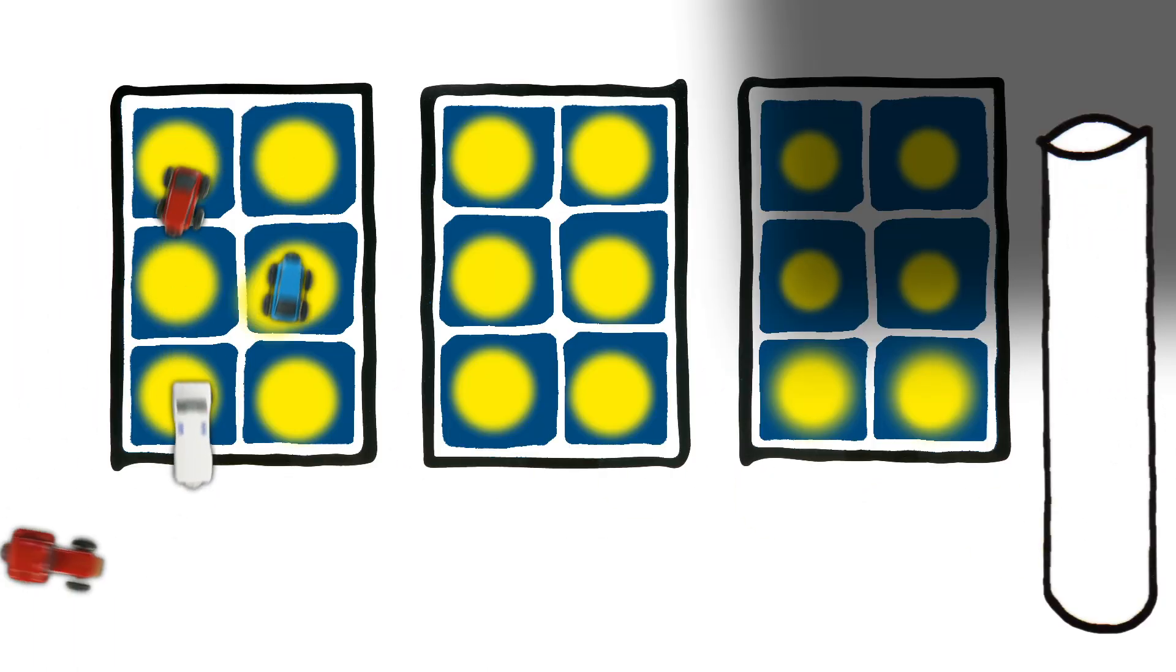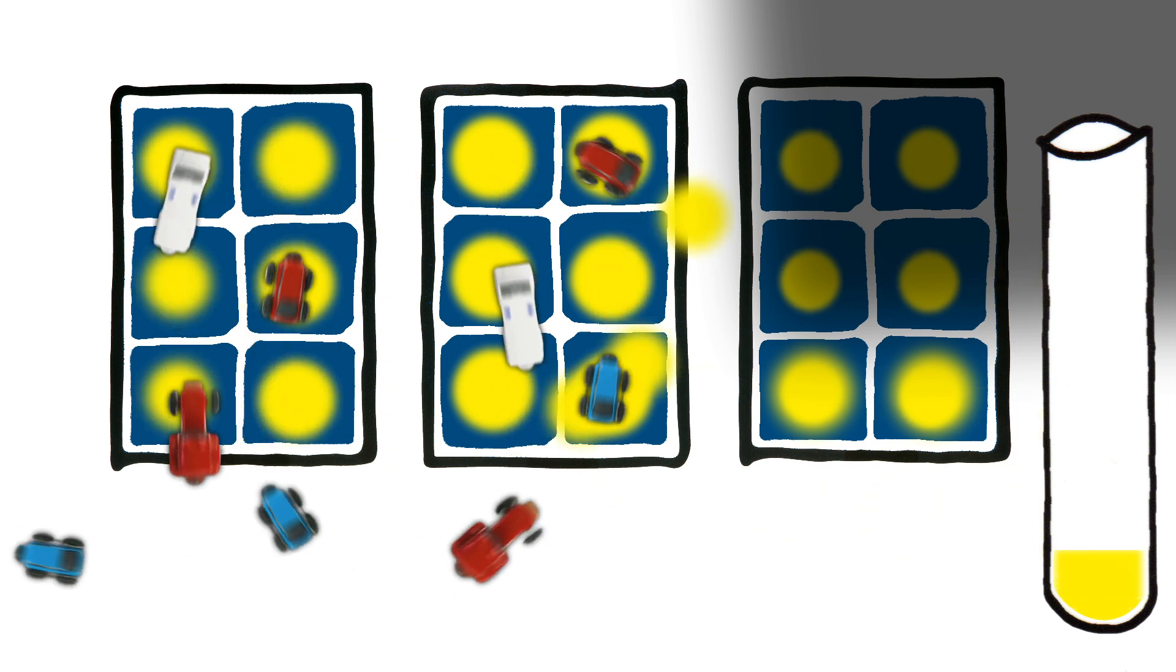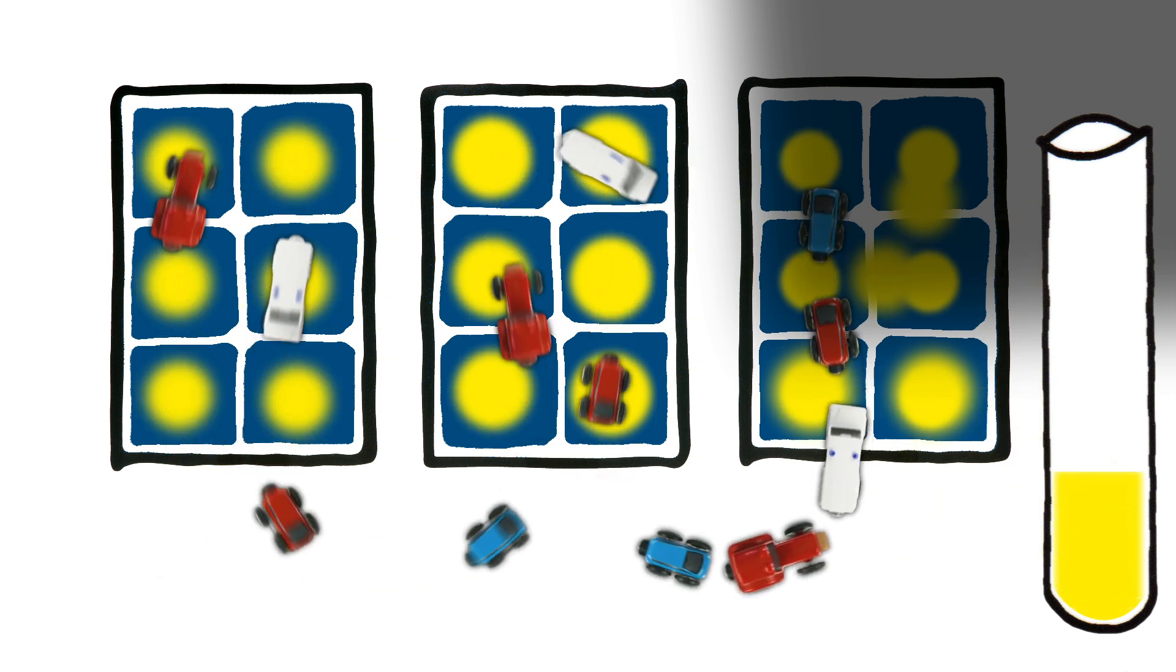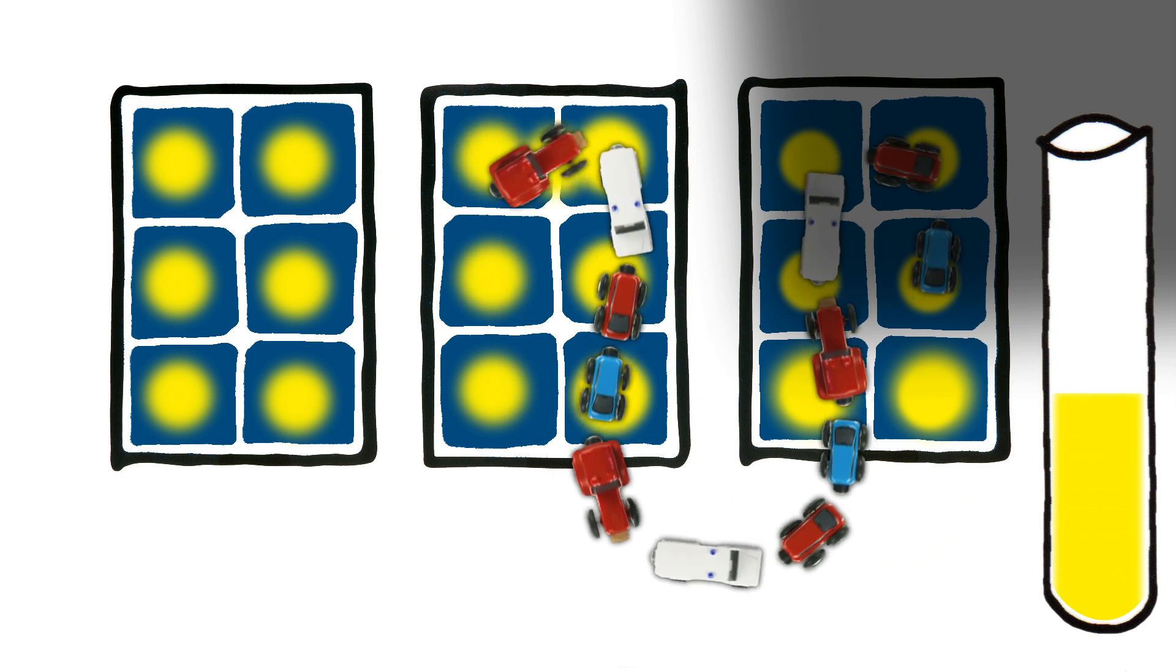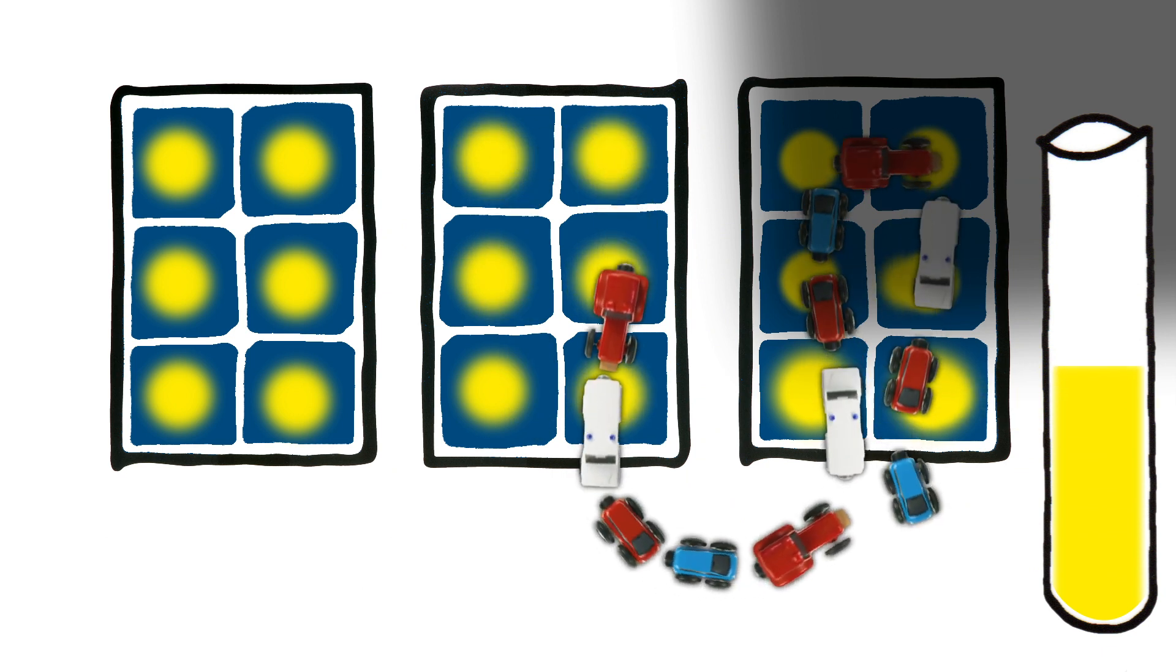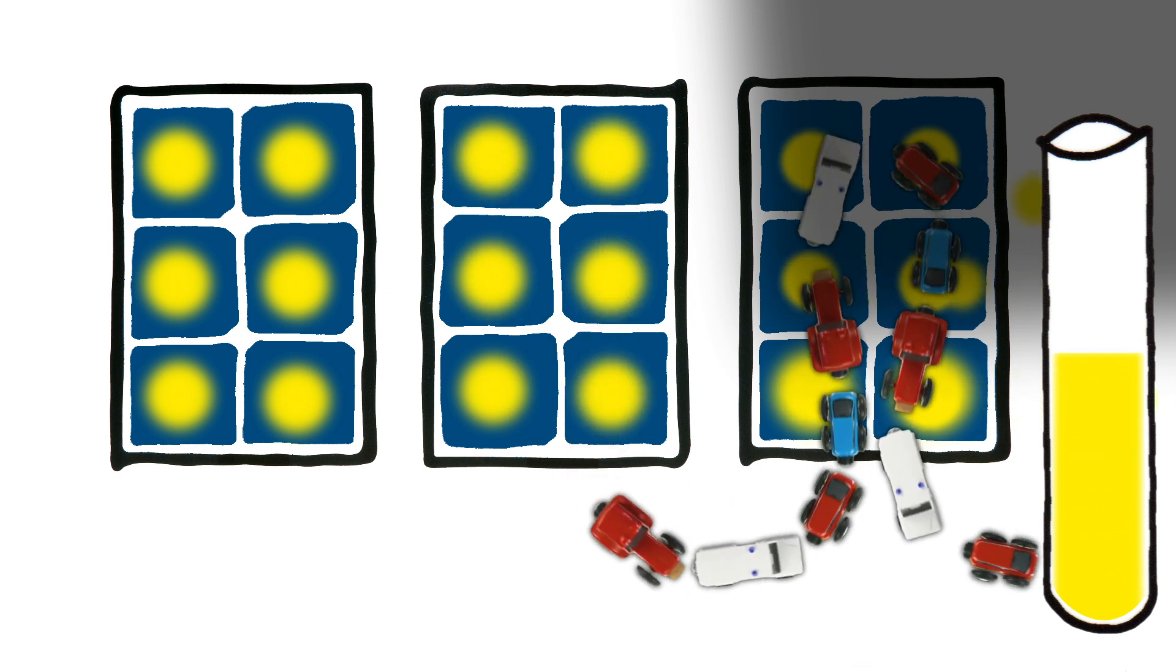Since no one can see electrical current, we use a fleet of cars driving through the modules instead. These cars drive fast in the sunlight and slow in the shade. Then, you end up with a traffic jam. And when cars can only drive very slowly, it means you lose a lot of energy yield.